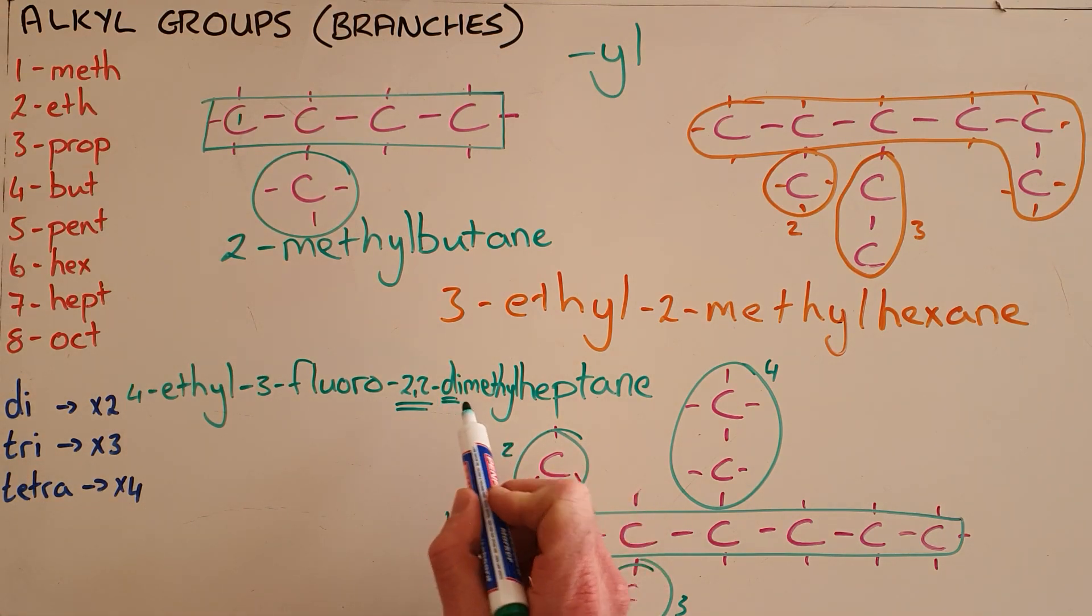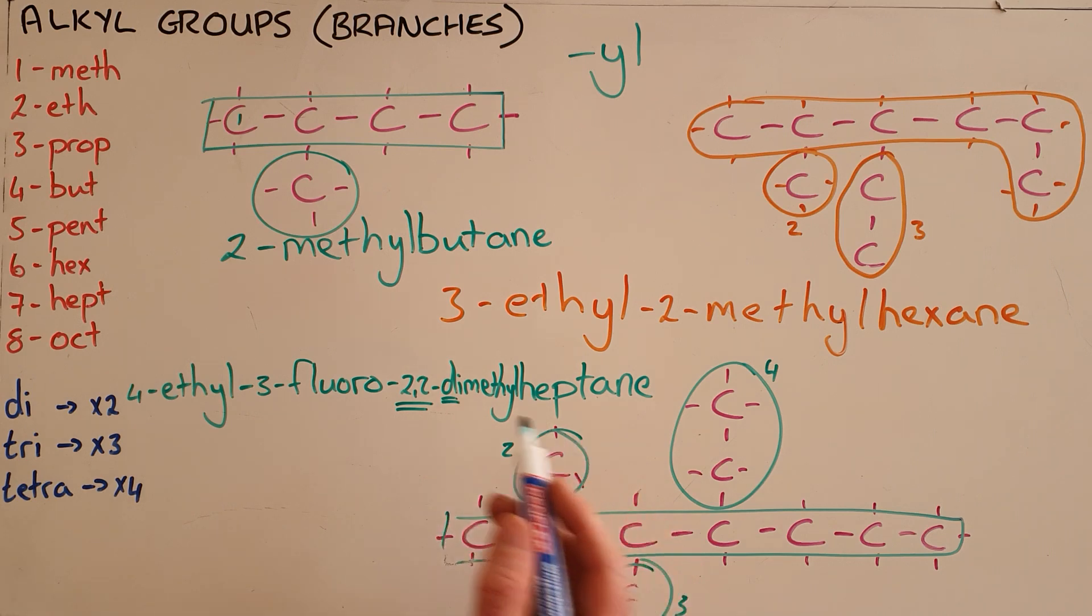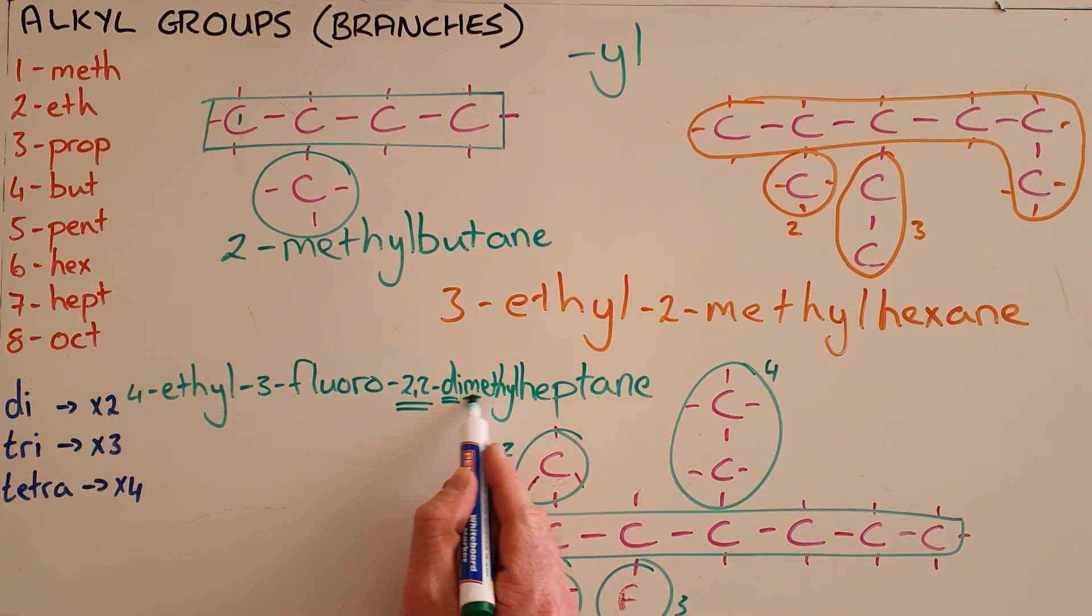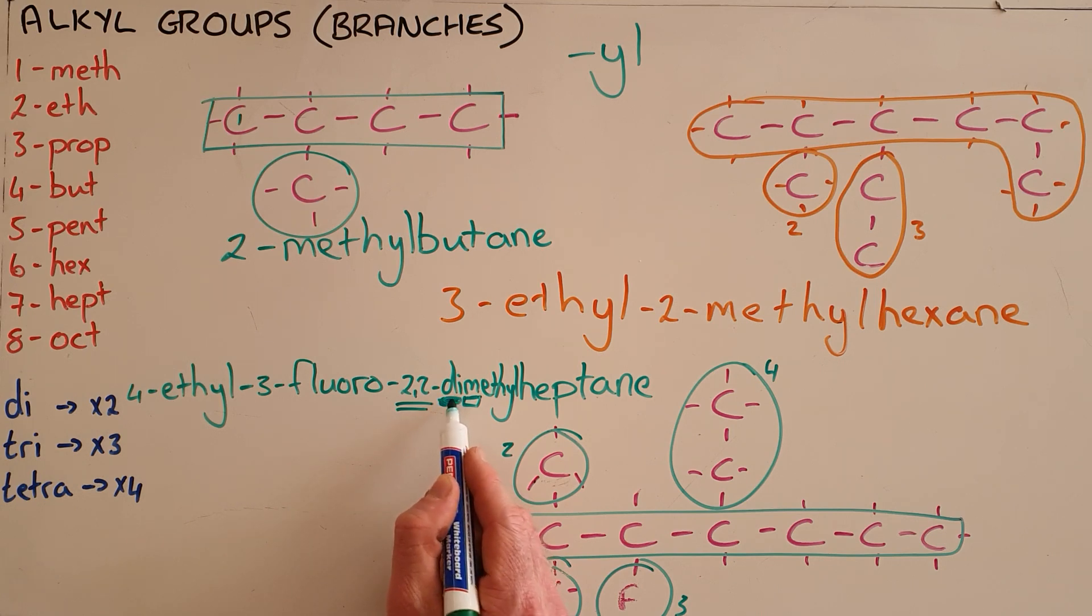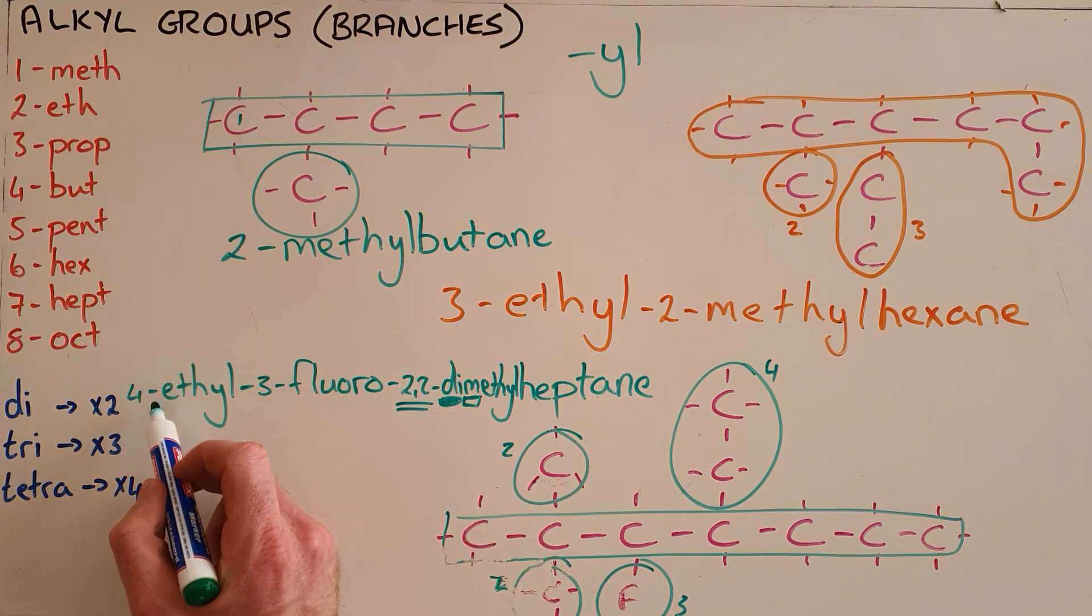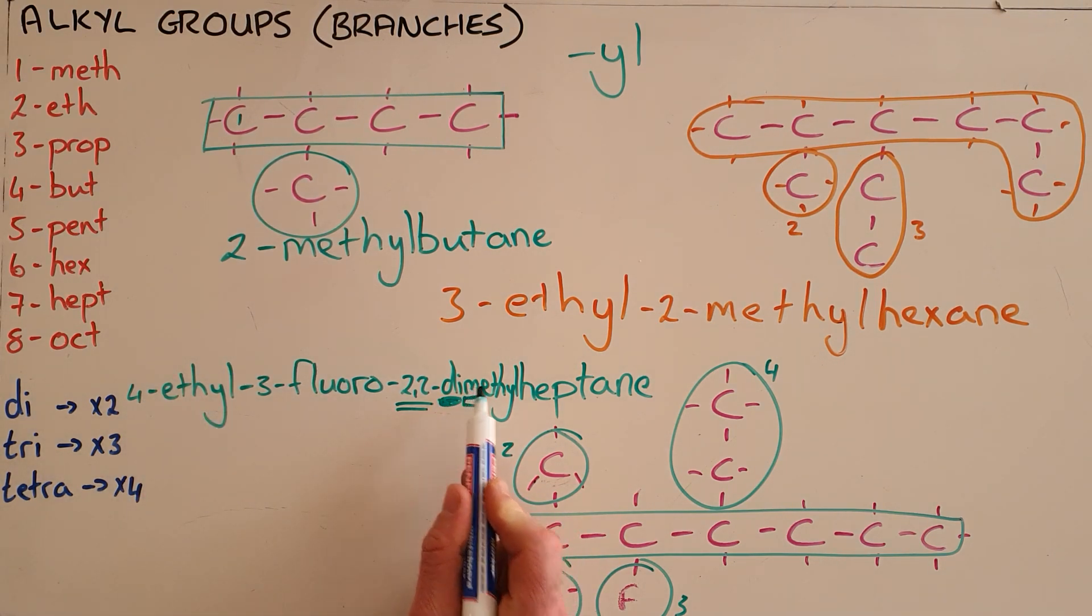Another important thing to note is that we still, when arranging them alphabetically, we still look at the M in methyl. We do not think that this is a D which should come before E. We always look at the prefix that is a result of the number of carbons in that chain.